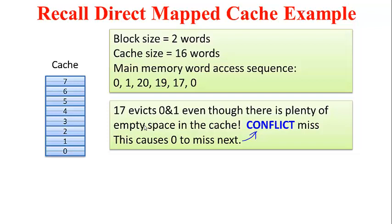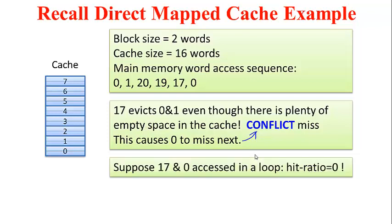Now suppose the program continued and suppose we had a loop where word addresses 17 and 0 were accessed repeatedly one after another. What will happen is that word addresses 17 and 0 will keep kicking out each other from the cache, and this will result in all of the memory accesses being cache misses, resulting in a hit ratio of 0.